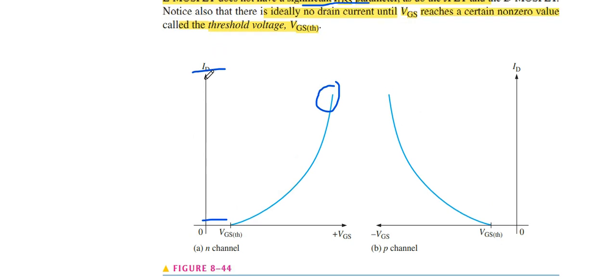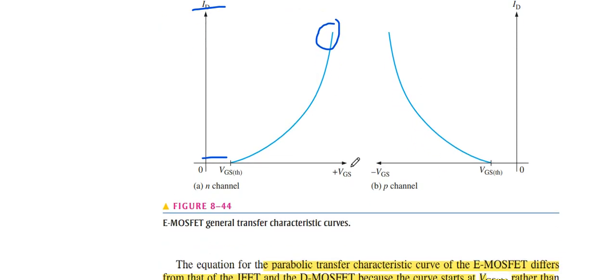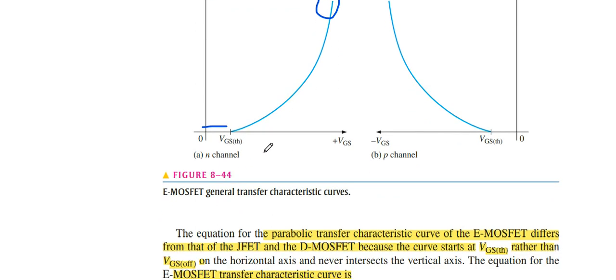This graph does not meet to the ID. There are no limits in this. It mentions us that at a certain value of VGS, the ID goes to the maximum.